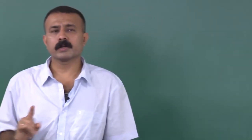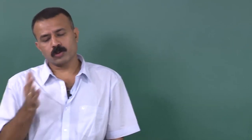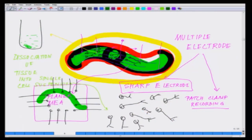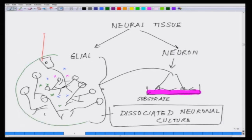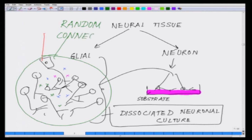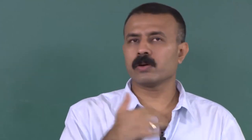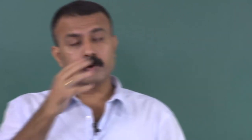This comes with a drawback. In the slice preparation the cytoarchitecture is maintained — the circuit is all intact — but once you dissociate everything, there is a random connectivity. You do not have really any control on their connectivity. This network forms in a very random manner; you really cannot dictate how many synapses are forming.